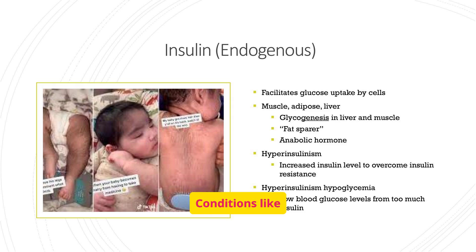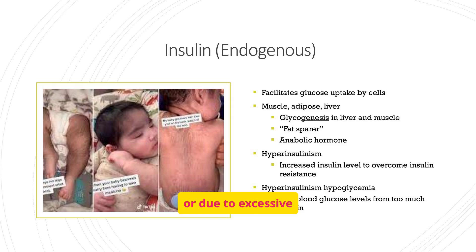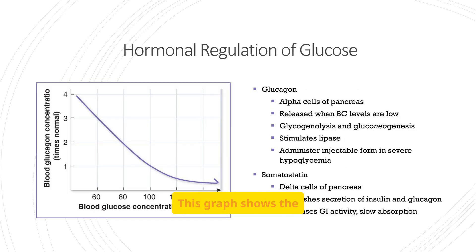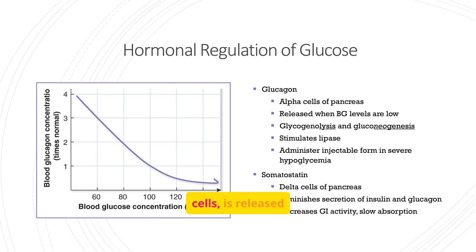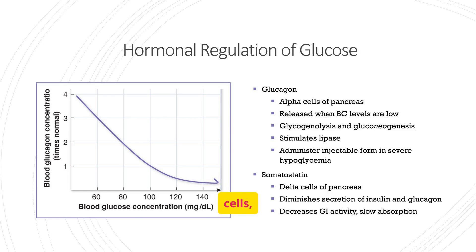This graph shows the relationship between glucagon and blood glucose. Glucagon, produced by alpha cells, is released when blood glucose is low, stimulating glycogenolysis and gluconeogenesis. Somatostatin, produced by delta cells, diminishes the secretion of both insulin and glucagon.